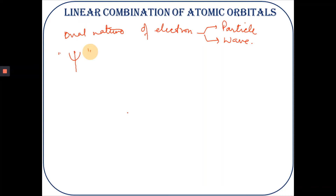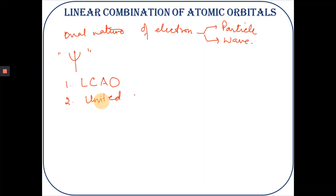The electrons in a molecule are present in molecular orbitals. The wave function describing a molecular orbital may be obtained by either of two procedures: the first is the linear combination of atomic orbitals, and the second is called the united atom method. Following either of these two procedures, we can obtain the wave function for the molecular orbital.